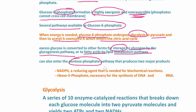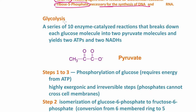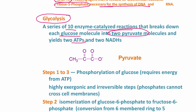Glucose-6-phosphate can also enter the pentose phosphate pathway, which produces two major products: NADPH and ribose-5-phosphate. Ribose-5-phosphate is needed for the synthesis of DNA and RNA, which will be covered in the next module. Glycolysis is a series of 10 enzyme-catalyzed reactions that break down each glucose molecule into two pyruvate molecules, and also yields two ATPs and two reduced coenzymes.